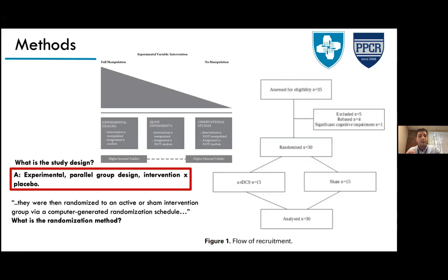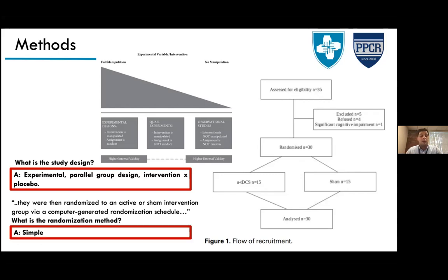Regarding the randomization method, the paper states patients were randomized via a computer-generated randomization schedule. A participant suggests block randomization to maintain balance between groups, but since the paper doesn't mention blocks, the presenter explains we assume simple randomization was used — a one-by-one computer-generated allocation.